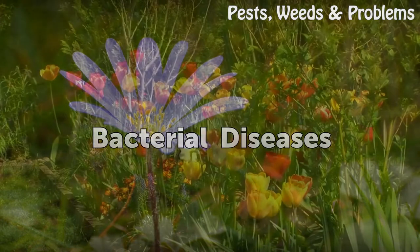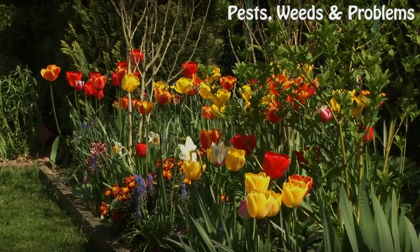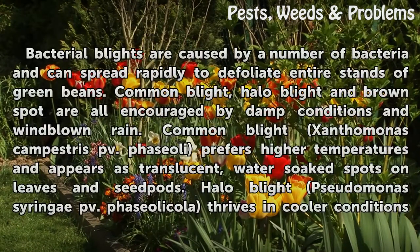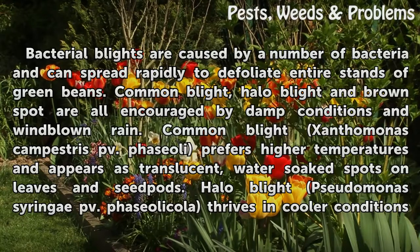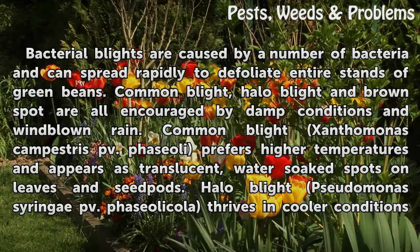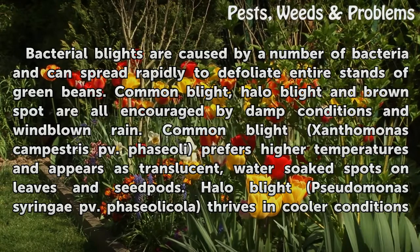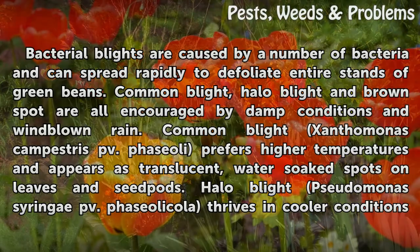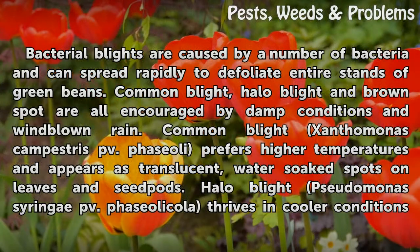Bacterial Diseases. Bacterial blights are caused by a number of bacteria and can spread rapidly to defoliate entire stands of green beans. Common blight, halo blight, and brown spot are all encouraged by damp conditions and wind-blown rain. Common blight, Xanthomonas campestris pv. phaseoli, prefers higher temperatures and appears as translucent, water-soaked spots on leaves and seedpods.